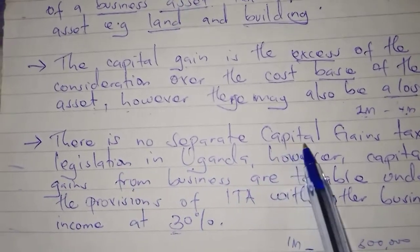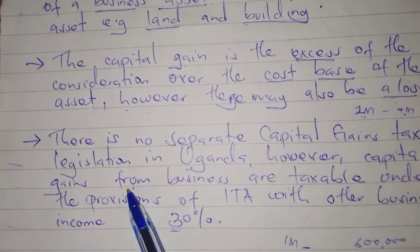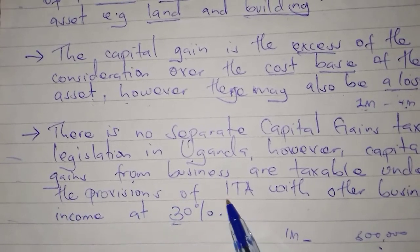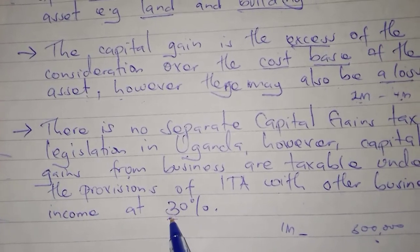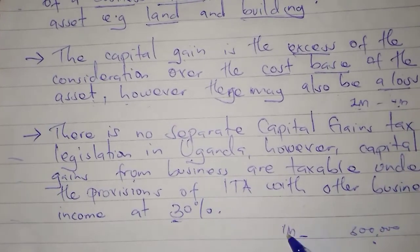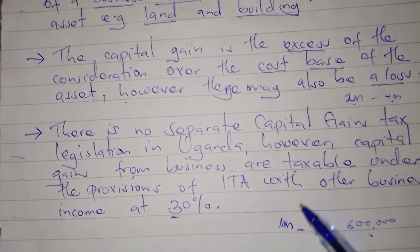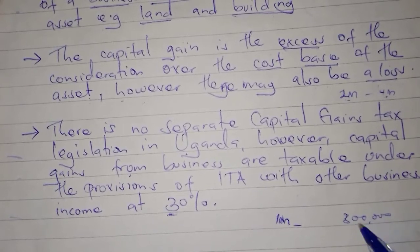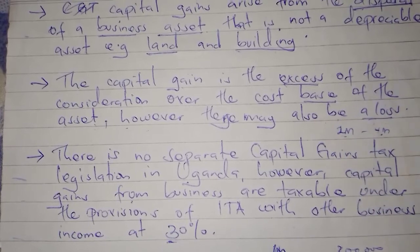There is no separate capital gains tax legislation in Uganda. However, capital gains from business are taxable under the provisions of the Income Tax Act, together with other business income, at a rate of 30%. So if you have a capital gain of 1 million — a gain on disposal of 1 million — they tax 30% of it, which is 300,000 shillings.